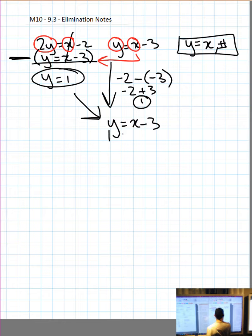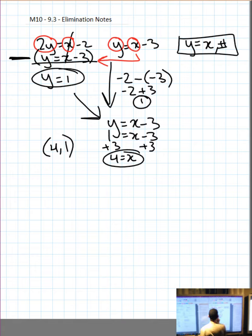I'm going to take the y value that I just figured out and substitute it in for y. 1 equals x minus 3. Add 3 to both sides. 1 plus 3 is 4. 4 equals x. Immediately write the point of intersection that you found: 4 comma 1, the x and the y value that we just figured out. Circle it twice.